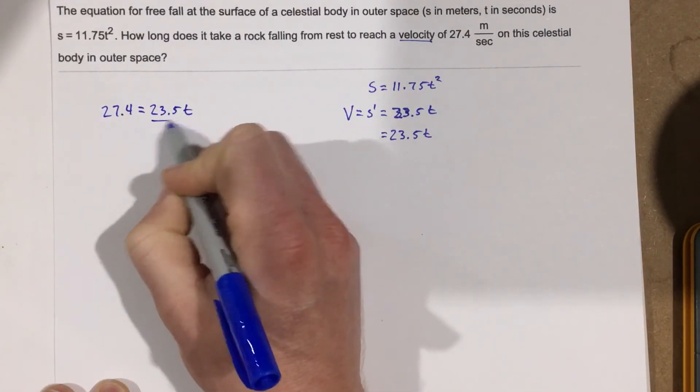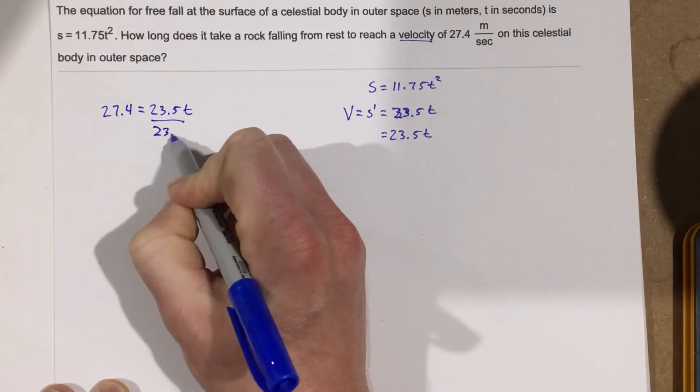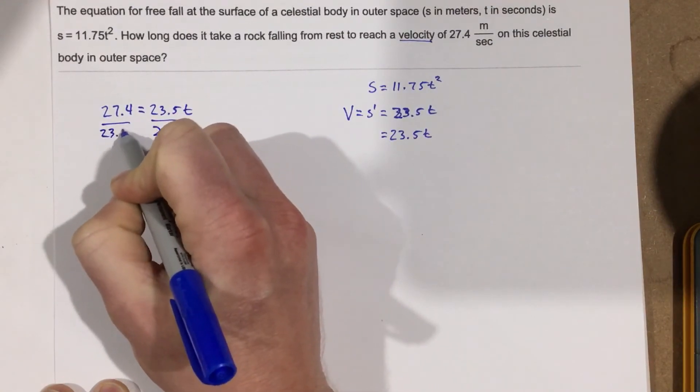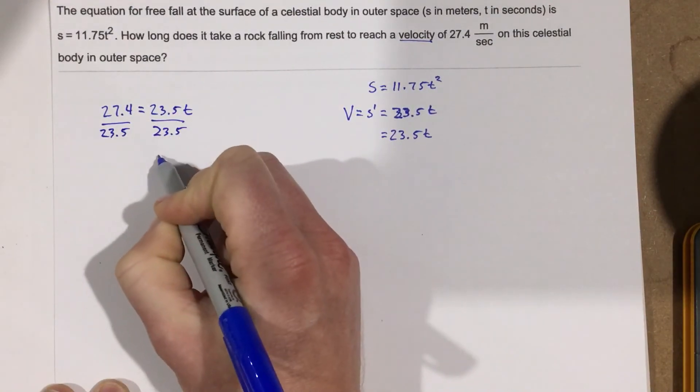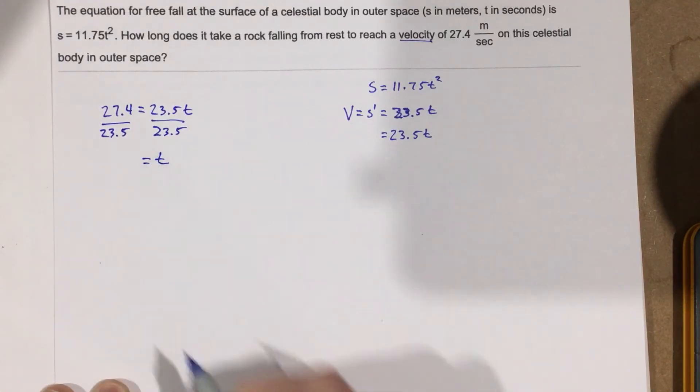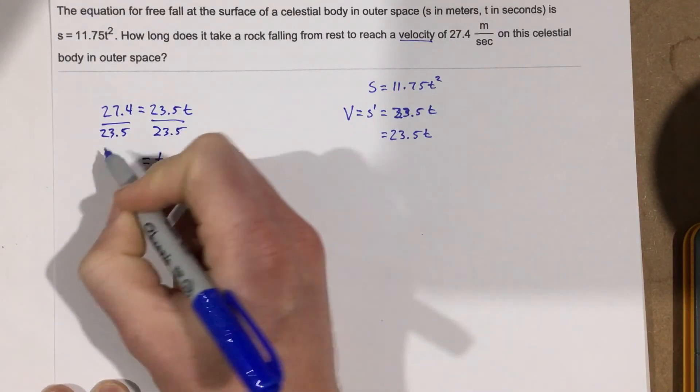We can now divide by 23.5 to get the time. And when we divide by 23.5, we get t equals 1.165.